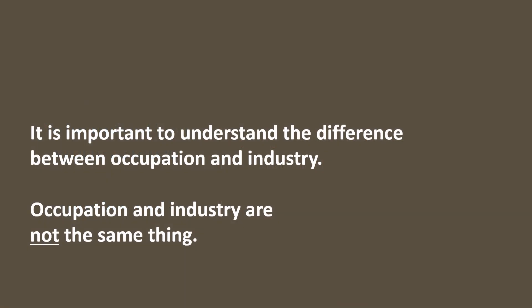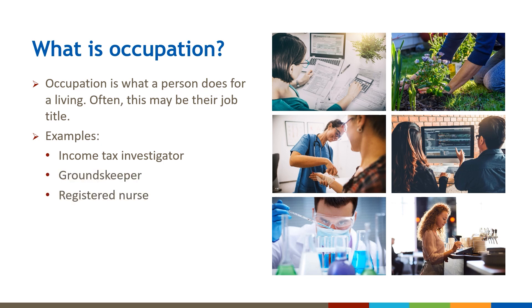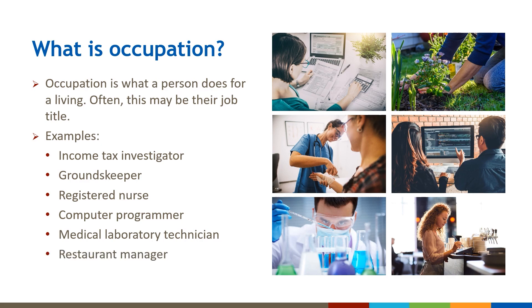It's important to understand the difference between occupation and industry — they are not interchangeable terms. Occupation is what a person does for a living or the type of job they have, the actual work they do. Often this will be the person's job title. Examples of occupation include income tax investigator, groundskeeper, registered nurse, computer programmer, and medical laboratory technician.